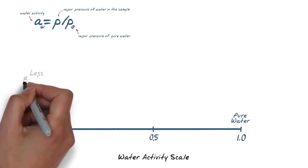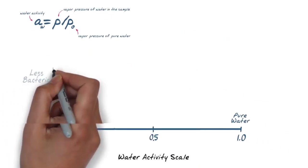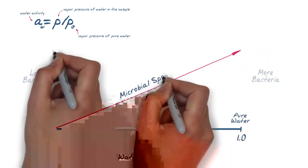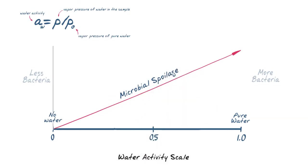In other words, the more unbound water we have, the higher the likelihood of microbial spoilage. Unbound water will exert vapor pressure which can be used to determine microbial spoilage, chemical, and physical stability.